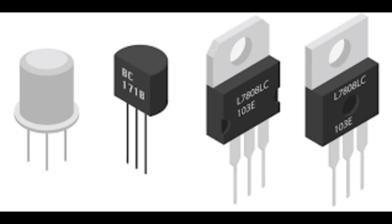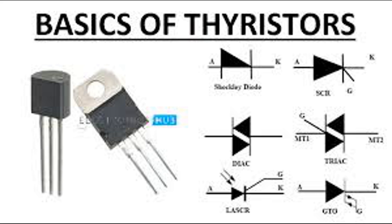Consumer electronics — home appliances: thyristors control the power in home appliances such as microwave ovens, washing machines, and air conditioners, providing features like variable speed and temperature control. Electronic toys: thyristors are used to control motors and other electronic functions, enhancing performance and interactivity. By leveraging their ability to handle high voltages and currents and provide precise control, thyristors play a crucial role in a wide range of applications, from industrial automation to consumer electronics.